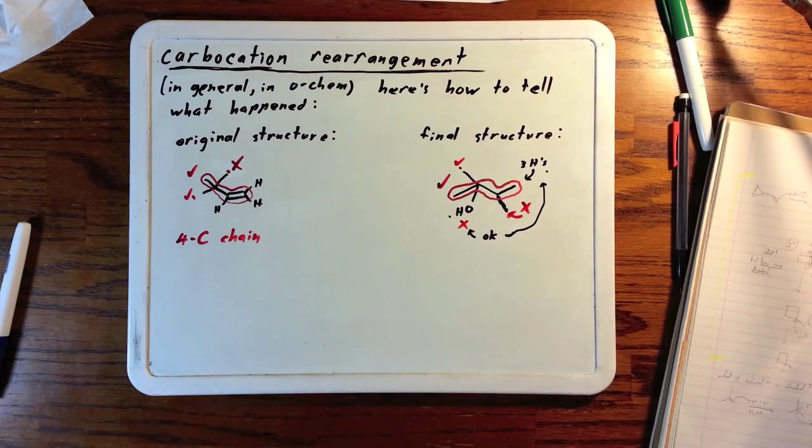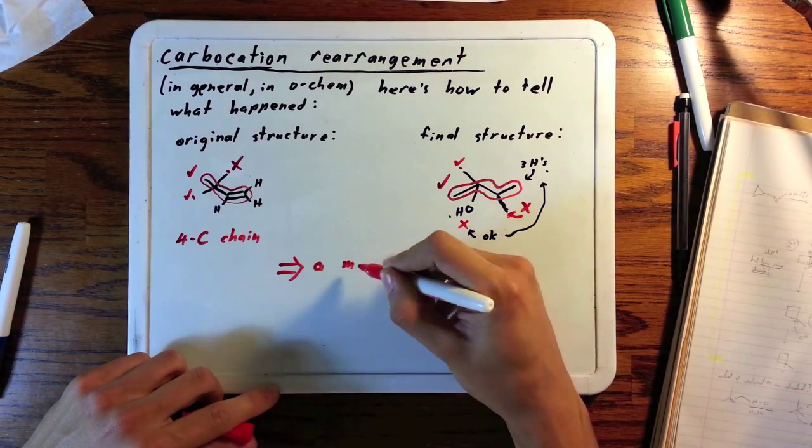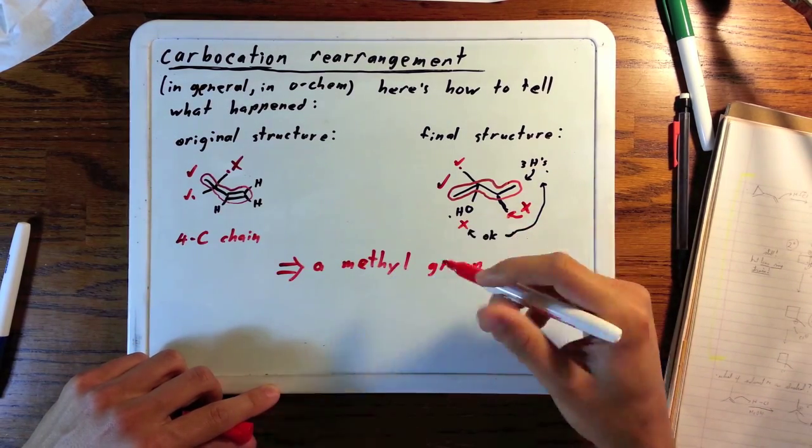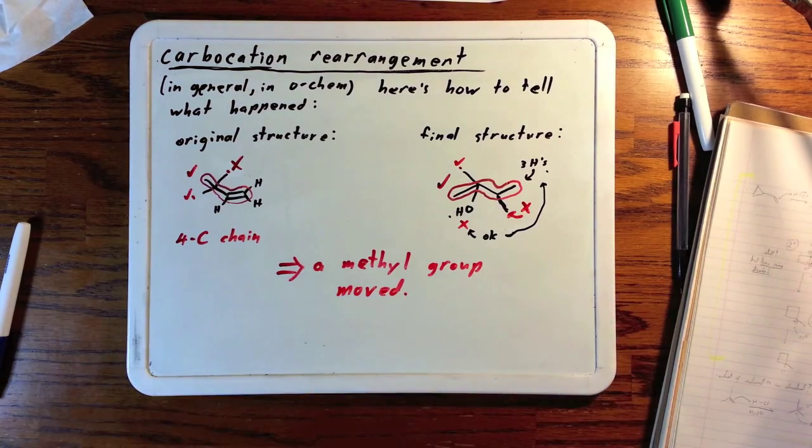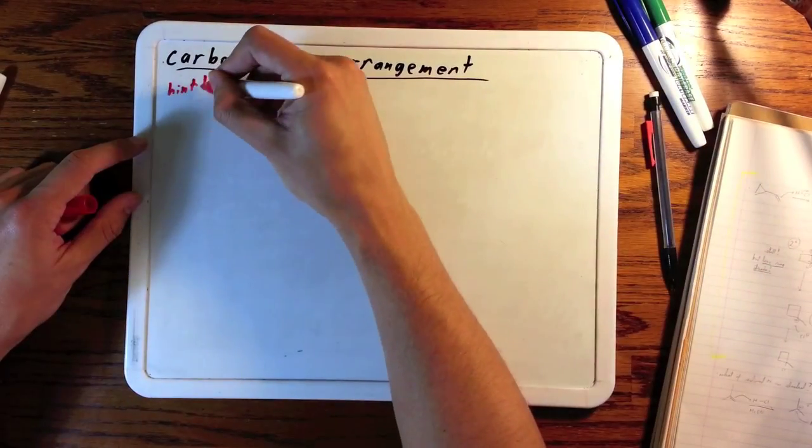The way to explain this with the fewest possible changes in the molecule is that a methyl group moved. This is new to us, so now we're going to look at how this happened.